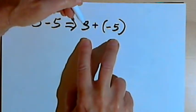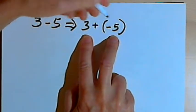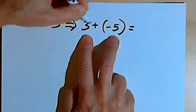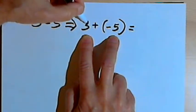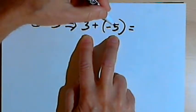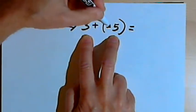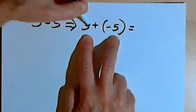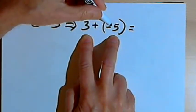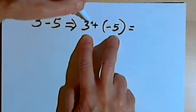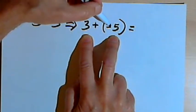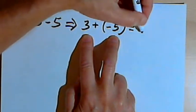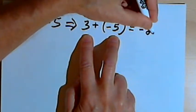Now I can use what I know about adding positive and negative numbers. The signs are different, so I take the absolute value of each number and find the difference of those values. The difference of 3 and 5 is 2. The bigger number was 5 and it was negative, so I use that sign and get negative 2.